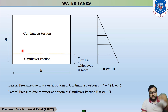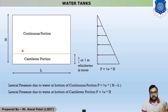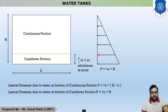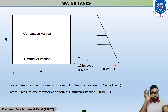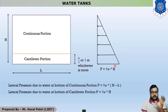With increasing depth, the pressure increases. At the top of the water tank, the pressure is minimum. As depth increases, pressure increases. The maximum pressure at the bottom is gamma_w multiplied by H.